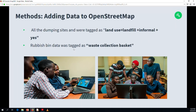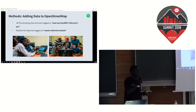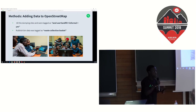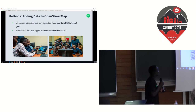The second phase involved adding data to OpenStreetMap using the images we had collected. We first created a shape via the capture project process that Eduardo explained. We had to choose appropriate tags — we found that 'land use = landfill + informal' best described the illegal dumping sites, and rubbish bins were tagged as waste collection baskets. Those were the two major tags we used.